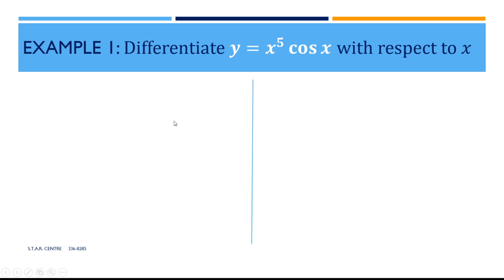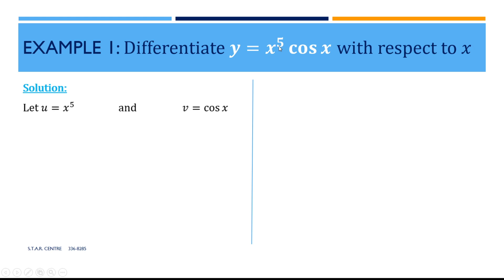Example 1: Differentiate y equal to x to the power of 5 times cos x with respect to x. This is a product of two functions — x to the power of 5 is the first one and cos x is the second one. We are going to start by making a substitution: let u equal x to the power of 5 and v equal cos x.